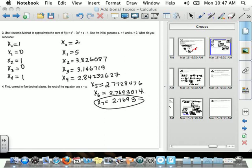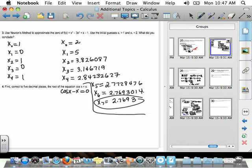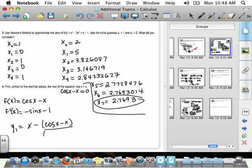So number 4, it says find correct to five decimal places the root of the equation cosine of X equals X. So what is your F of X? Right, cosine X minus X because we need it to be equal to 0. We're trying to find the 0 of my function. So F of X is cosine of X minus X. So F prime of X is negative sine of X minus 1. So on your Y1, you're going to plug in X minus F of X, so cosine of X minus X, divided by negative sine of X minus 1.